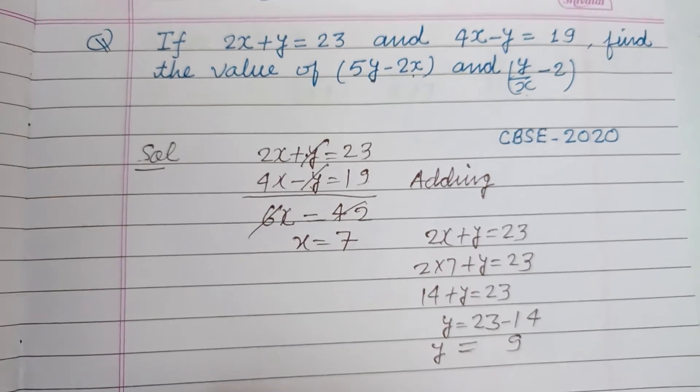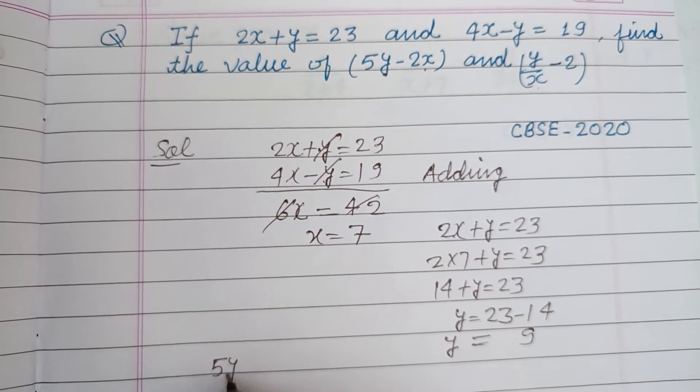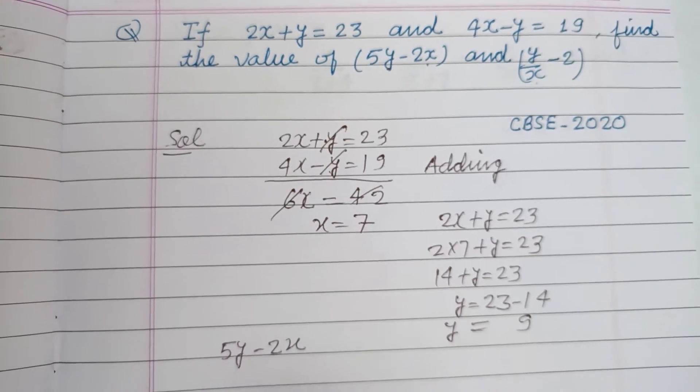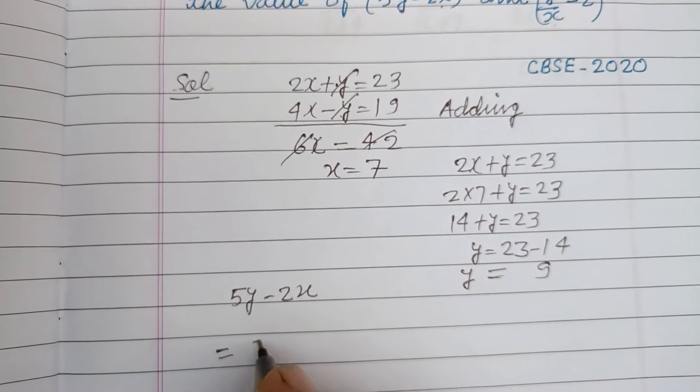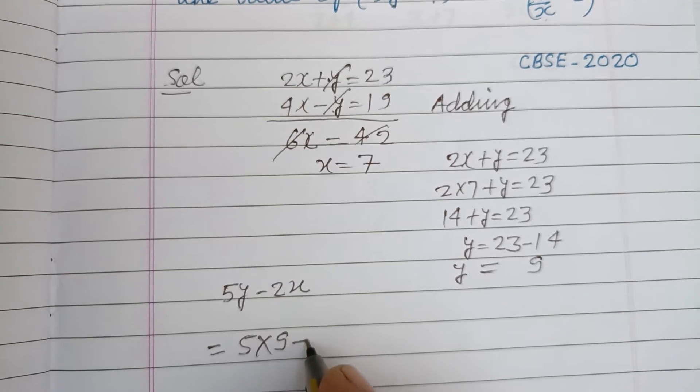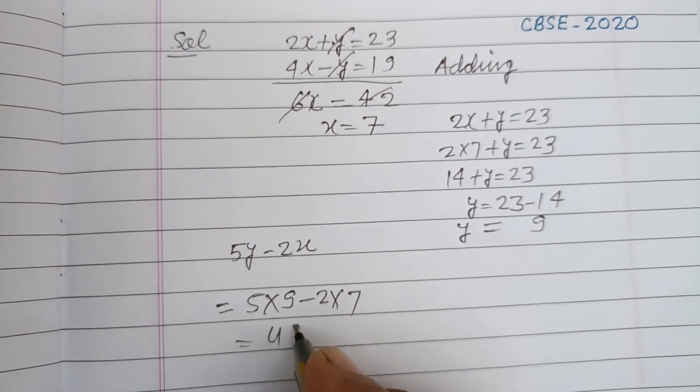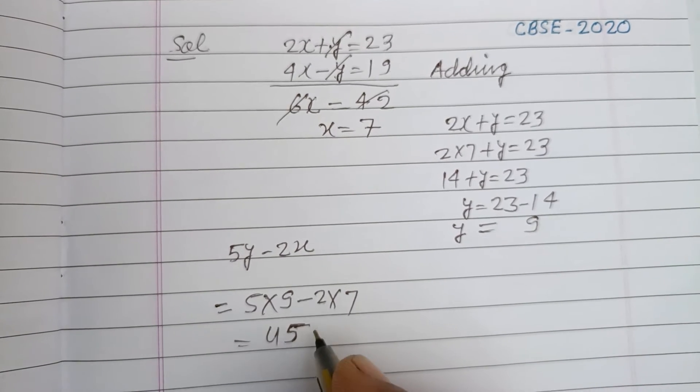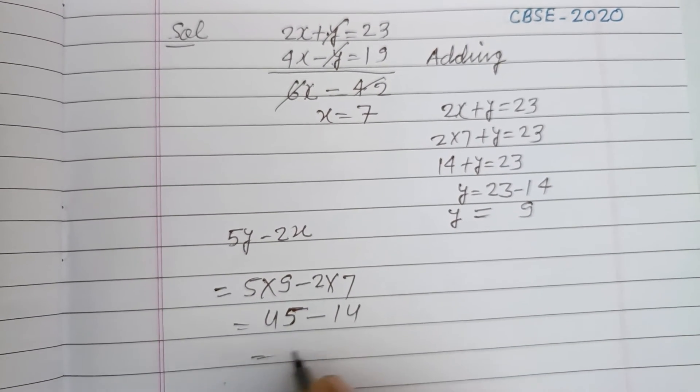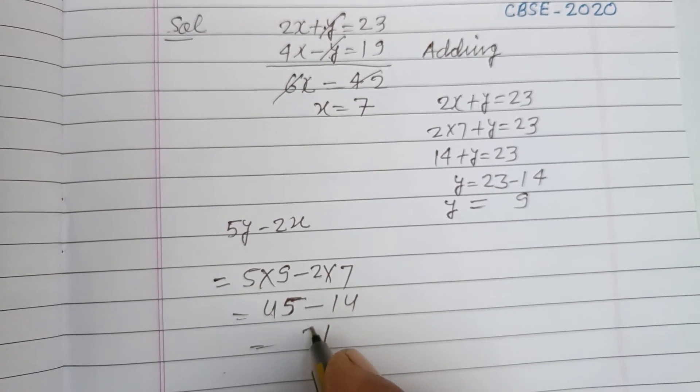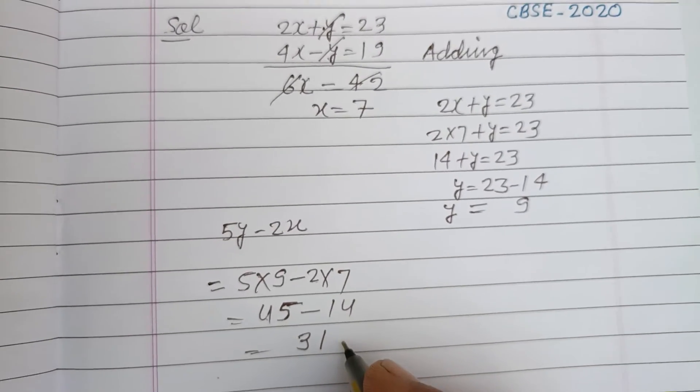Now the question asks for the value of 5y - 2x. So 5y where y is 9, minus 2x where x is 7: 5 times 9 is 45 minus 2 times 7 is 14. This gives 31 as the answer.